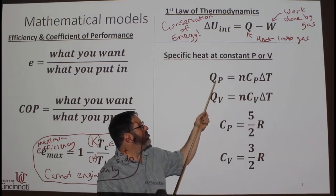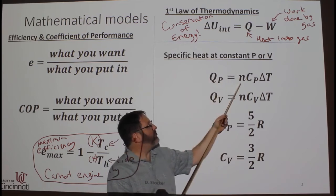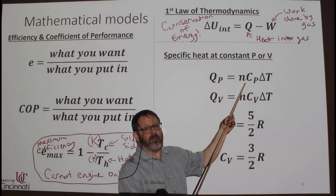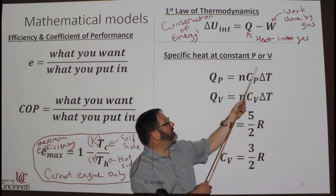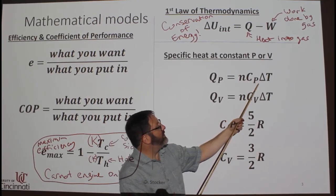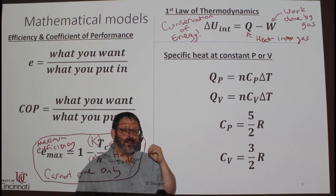So this is Q. This example is for constant pressure. Q at constant pressure equals not M this time, not the mass, but N, the number of moles, times CP. This is the specific heat at constant pressure times the change in temperature of the gas.